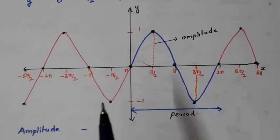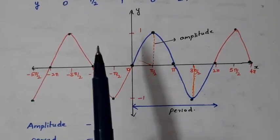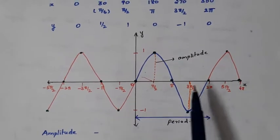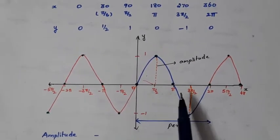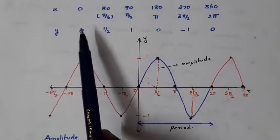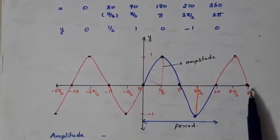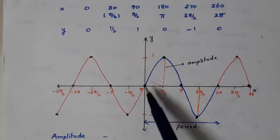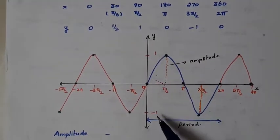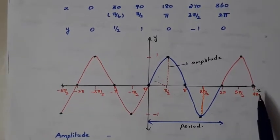The domain is the set of all real numbers, but since x represents angles, we represent the angles along the x axis. Instead of numbers, we represent them in radians. So for x values, we represent the radians along the x axis and the corresponding y values along the y axis. The range is minus 1 to plus 1, so we mark minus 1 and plus 1 along the y axis and the angles along the x axis.